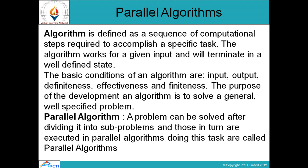An algorithm is a sequence of steps which produces a result from initial values. The basic conditions of an algorithm are: input, which is our initial conditions; output, which is our desired result; definiteness, meaning every step is distinct and one step performs one task; effectiveness, meaning we should be efficient in our algorithm; and finiteness, meaning the algorithm must complete in a finite number of steps.